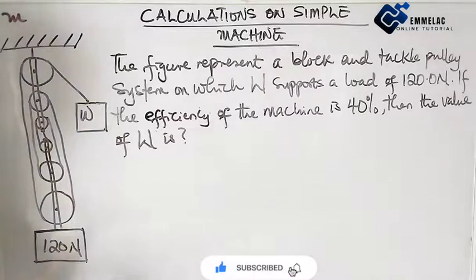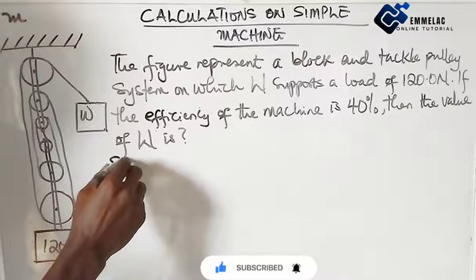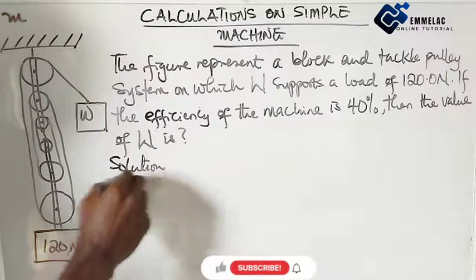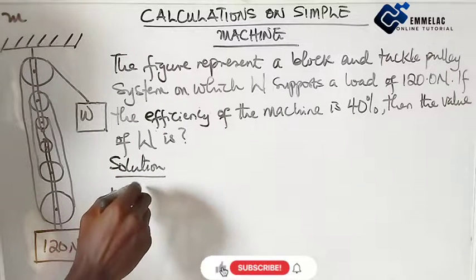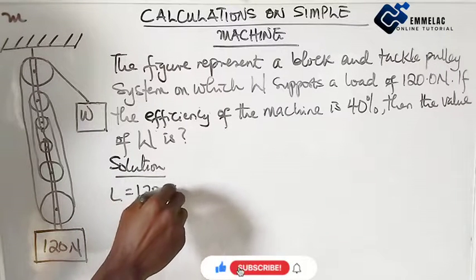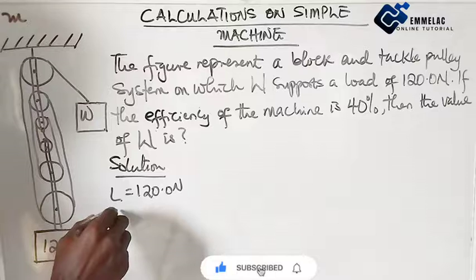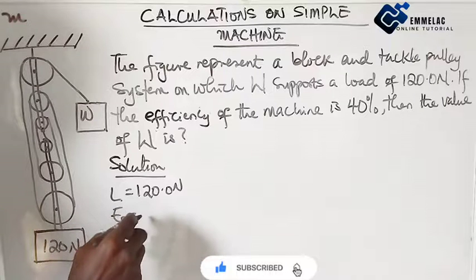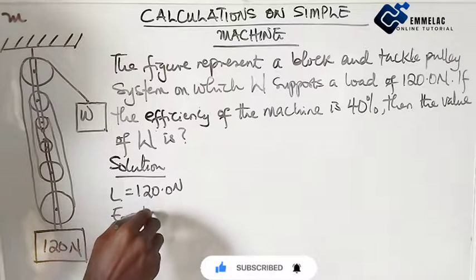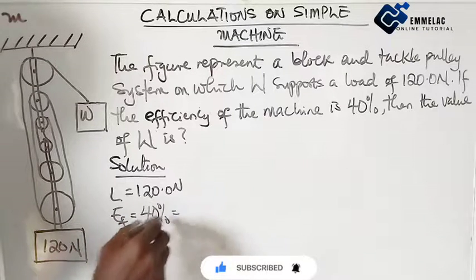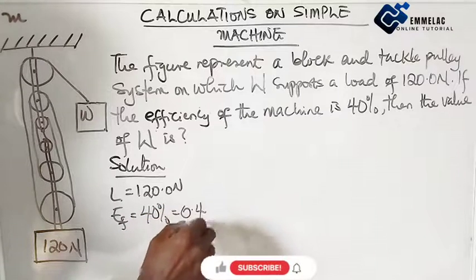Let us write out the parameters. The load here is giving us 120. The efficiency is giving us 40%, which will give us 0.4.